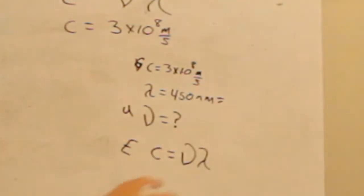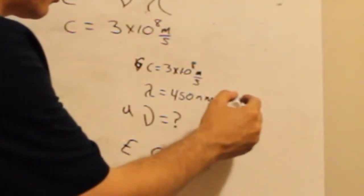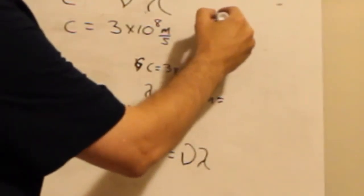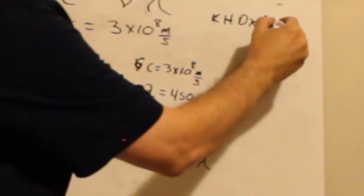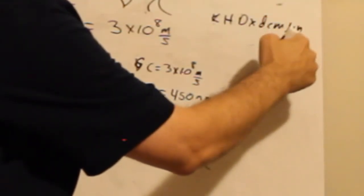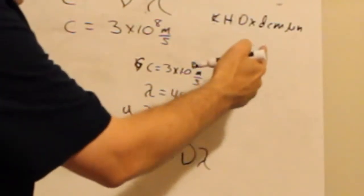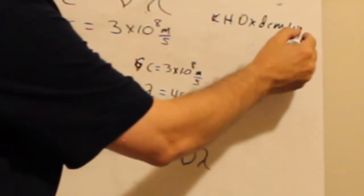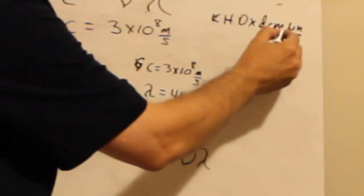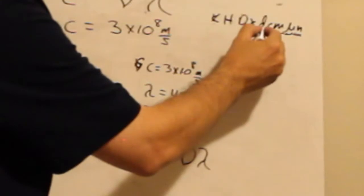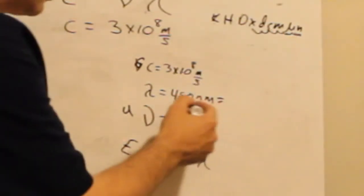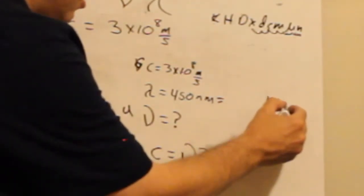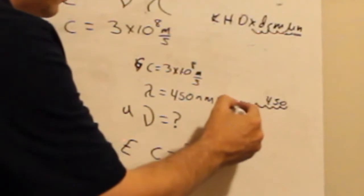From our process that we learned earlier, we learned that we can take this and do our King Henry died while drinking chocolate milk. There's nano, so we can stop there. And I'm at nano, and I'm going to meters. So, nano, one, two, three, four, five, six, seven, eight, nine. Nano actually means nine. So, we're going to move our decimal nine places.